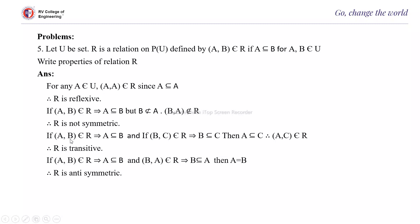For transitivity: if (A, B) belongs to R, A is a subset of B, and if (B, C) belongs to R, B is a subset of C, then A is a subset of C. Therefore, (A, C) belongs to R. Therefore, R is transitive. For anti-symmetry: if A is a subset of B and B is a subset of A, then it is obvious that A equals B. Therefore, R is anti-symmetric.